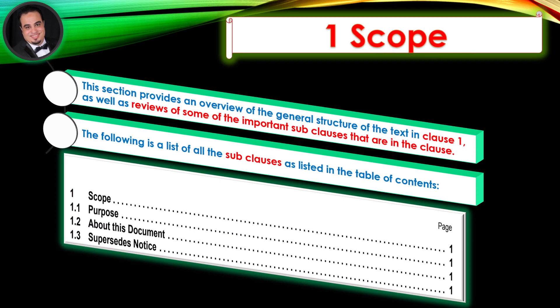This section provides an overview of the general structure of the text in Clause 1, as well as reviews of some of the important sub-clauses that are in the clause. The following is a list of all the sub-clauses as listed in the Table of Contents. In the following slides we highlight important information contained in Clause 1, accompanied by the sub-clauses.